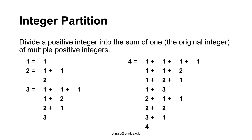If we want to partition 2, there are two options: one plus one, or two itself. If we want to partition 3, there are four ways: one plus one plus one, one plus two, two plus one, and three itself. If we want to partition 4, there are eight ways. Four ways use one as the first value, two ways use two as the first value, one way uses three as the first value, and one way uses four itself.